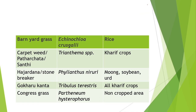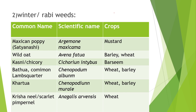Barnyard grass — Echinochloa crusgalli, found in rice. Carpet weed — Trianthema species. Hazardana or stone breaker — Phyllanthus niruri. Kokhuru kata — Tribulus terrestris. And Congress grass — Parthenium hysterophorus, found in non-cropped areas. These are the kharif weeds.